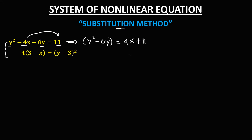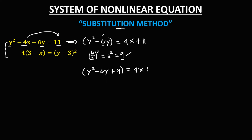Then by completing the square, take this number — that's 6 — divide by 2, then take the square: 6 divided by 2 is 3, and 3 squared is 9. Then we need to add 9 on the y side, so we have y squared minus 6y plus 9, then equals 4x plus 11, and we also need to add 9 on the right side.